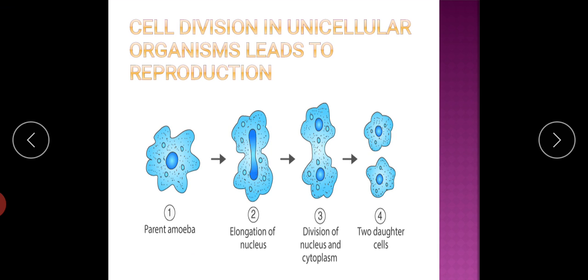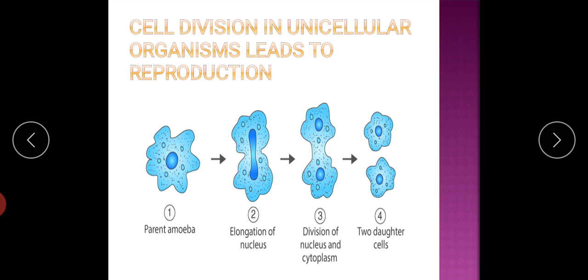Again, these grow and they will also divide to form new amoeba. So in unicellular organisms, cell division means reproduction. Maybe the cell divides one time or multiple division also may take place.